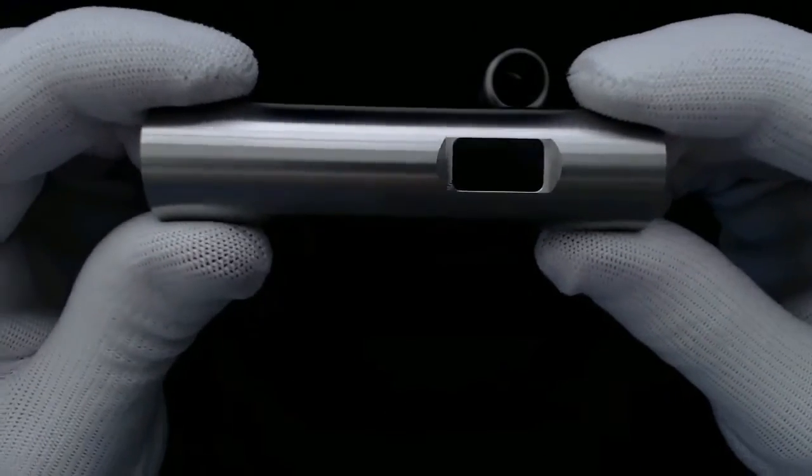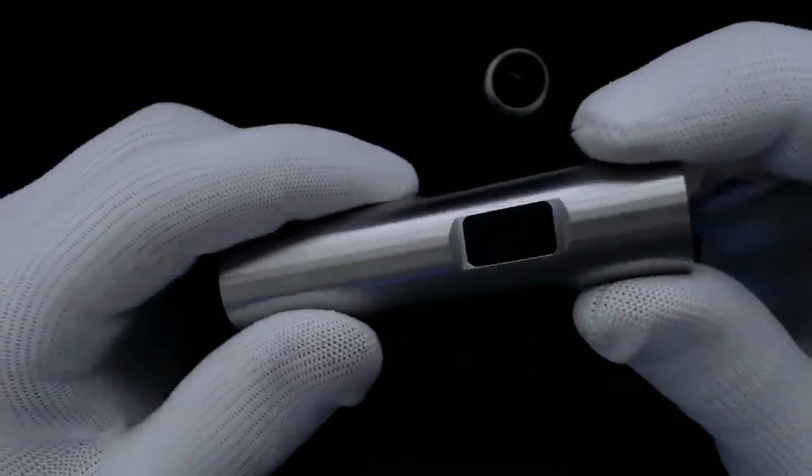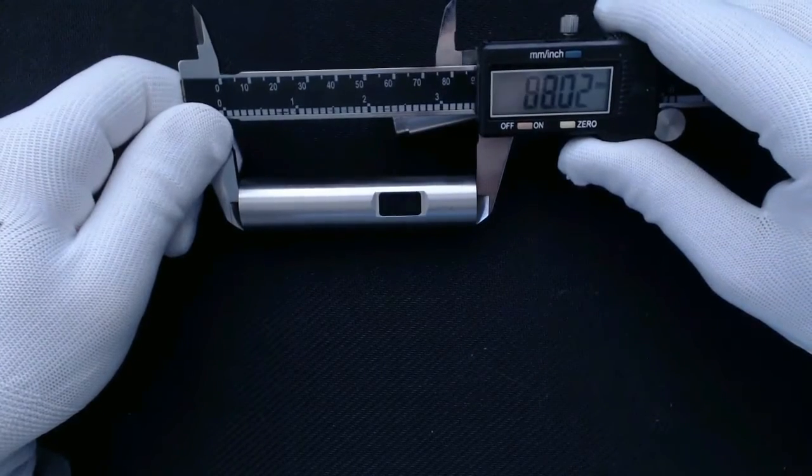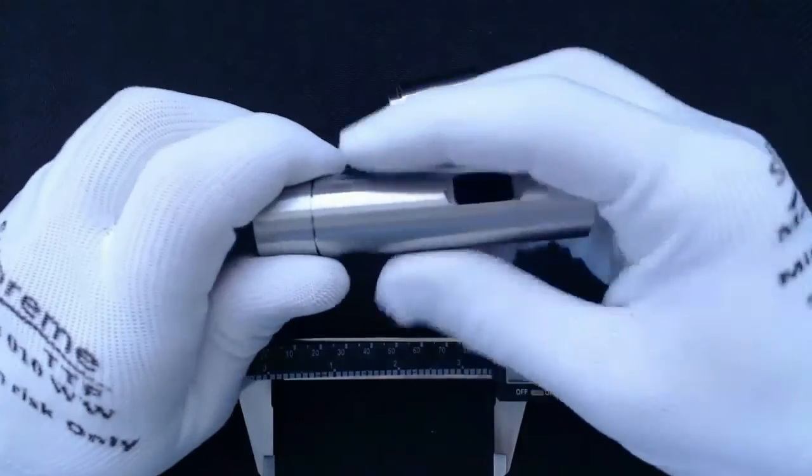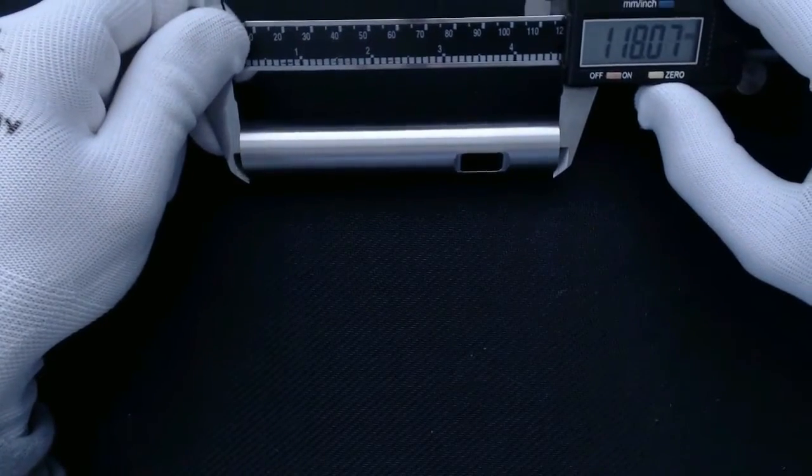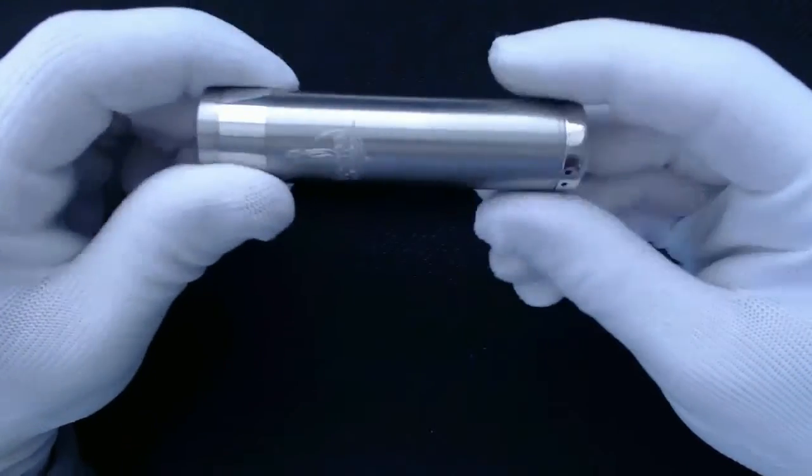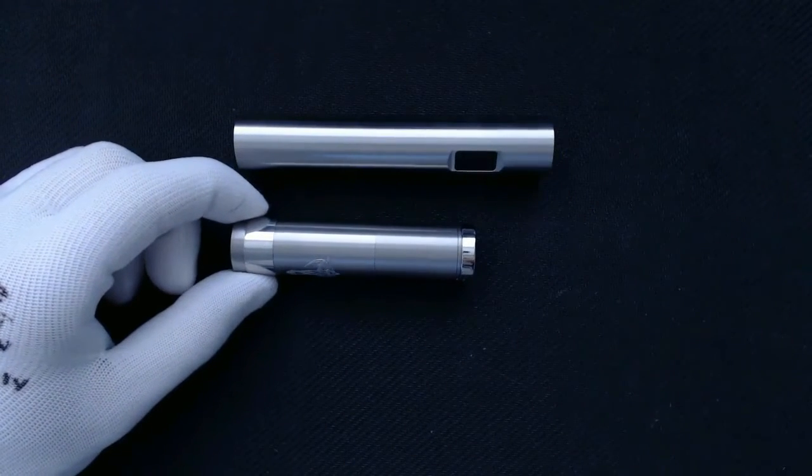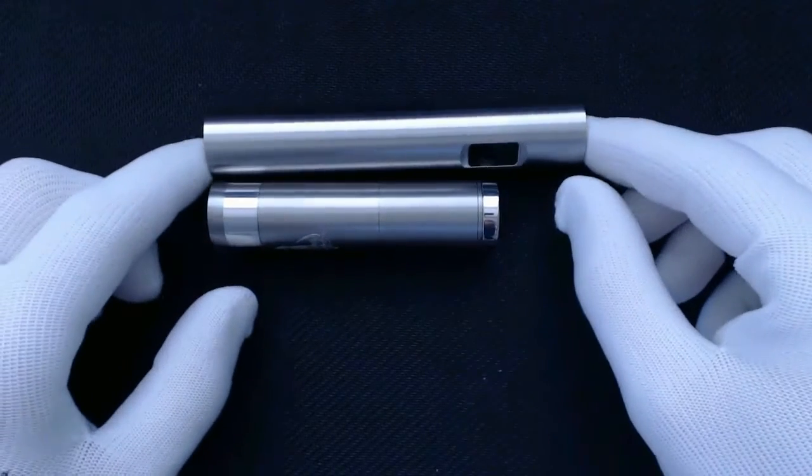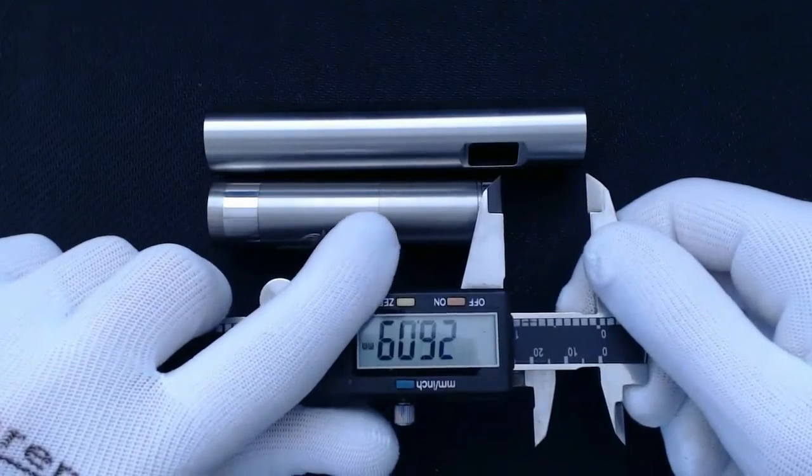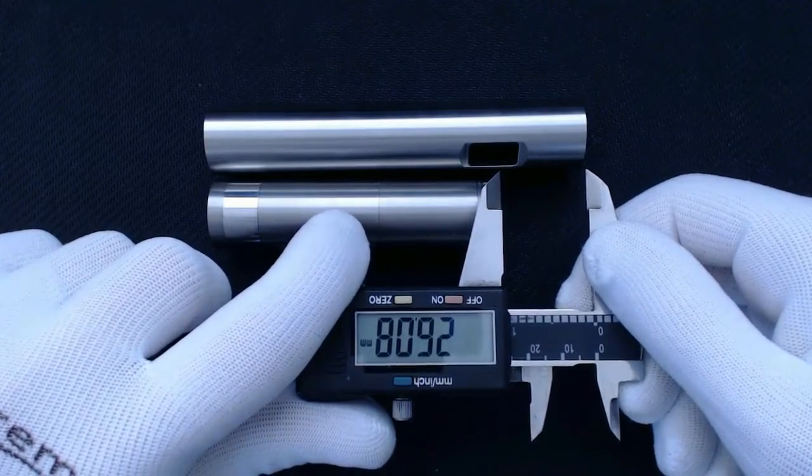That will now accept an 18350 battery, so a lot smaller in size. I'll run through the dimensions for you. In the 18350 size that measures 88 millimeters long and in the 18650 size that measures 118 millimeters long. So it's quite a size. For size comparison, this is a Nemesis mechanical mod in 18650. As you can see, I'll just zoom in a bit for you, that is quite a bit taller than a standard 18650 mech mod. That's coming out about 25-26 millimeters longer.